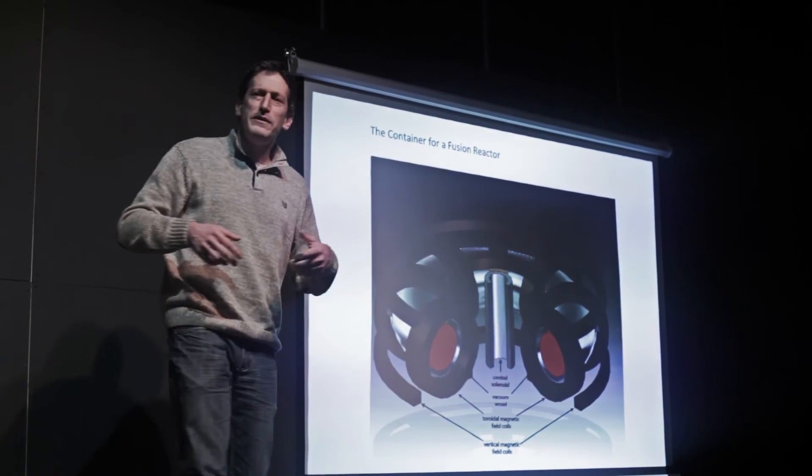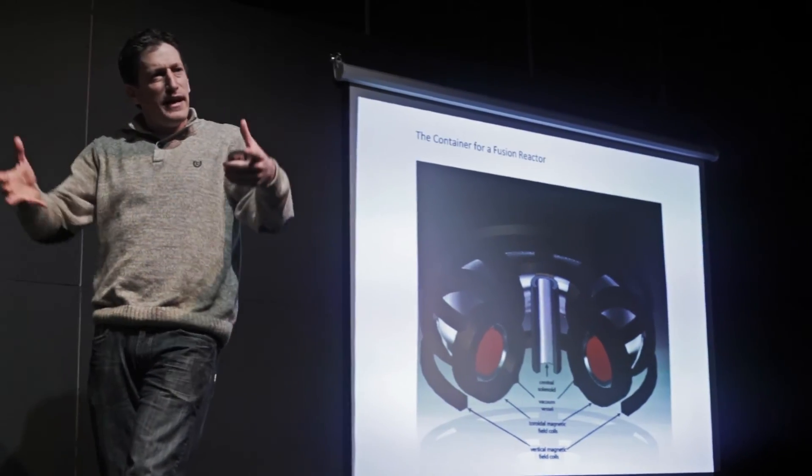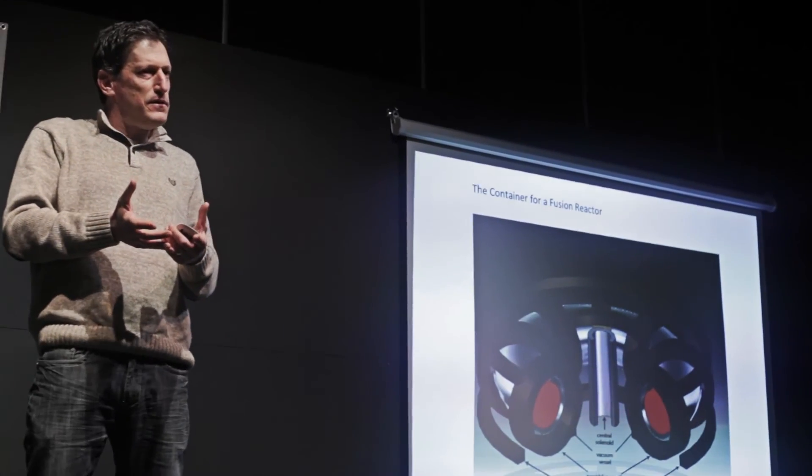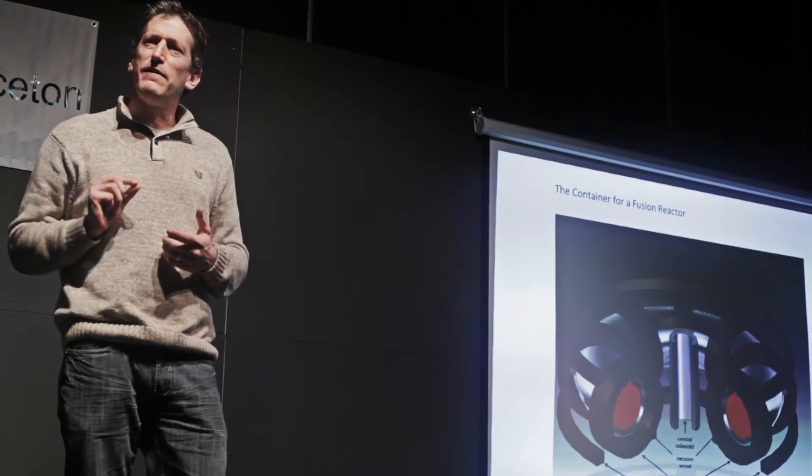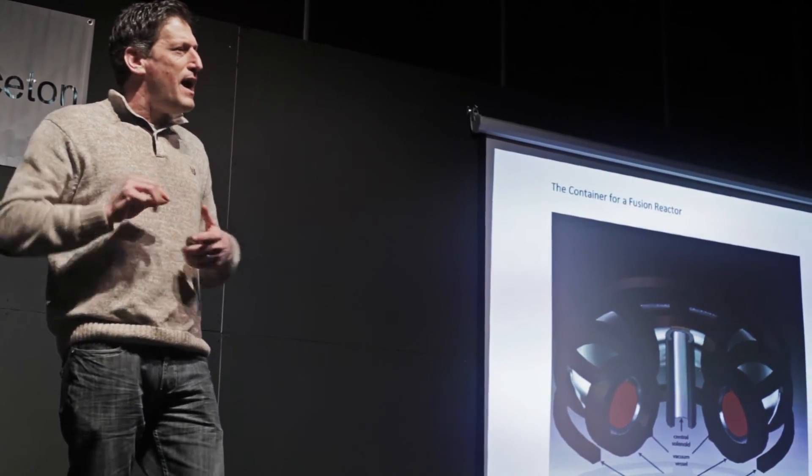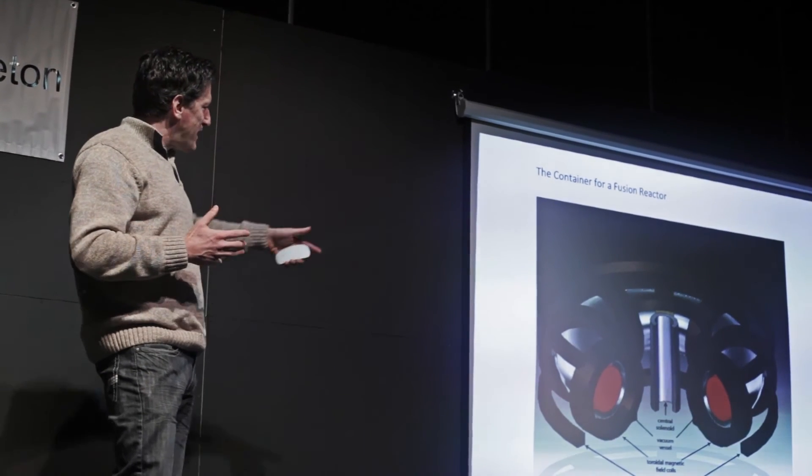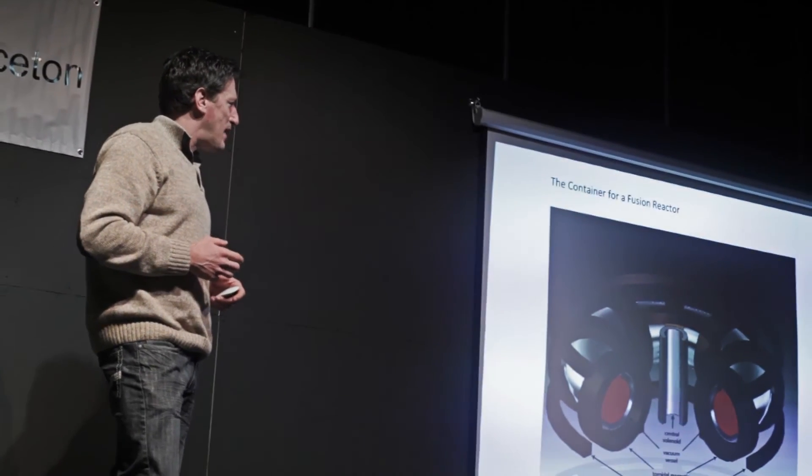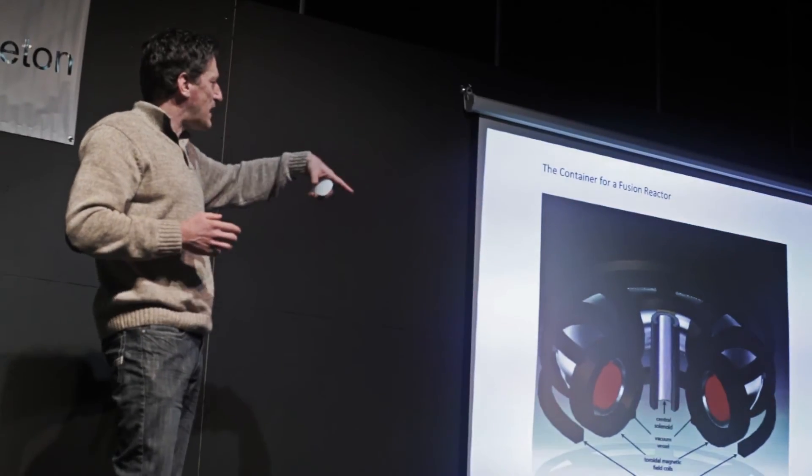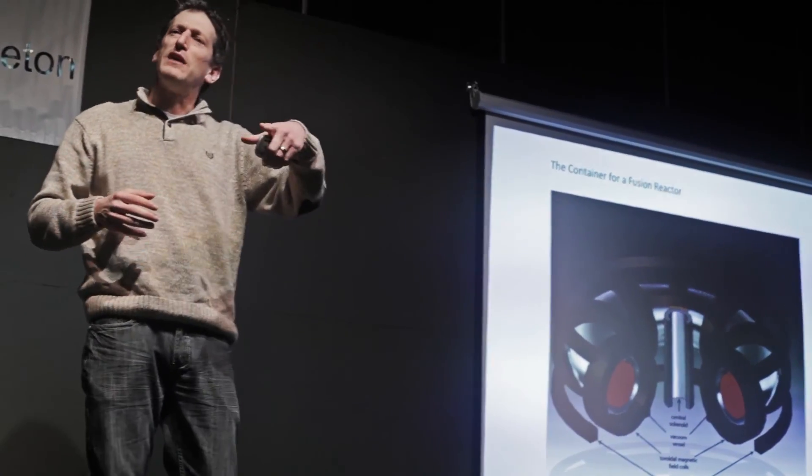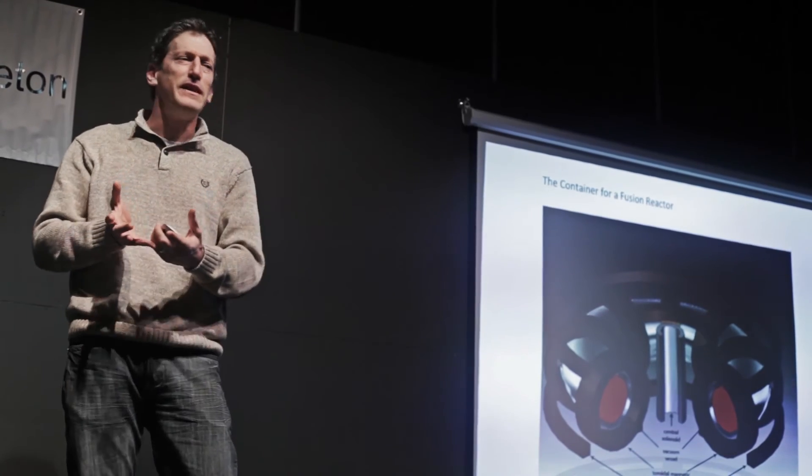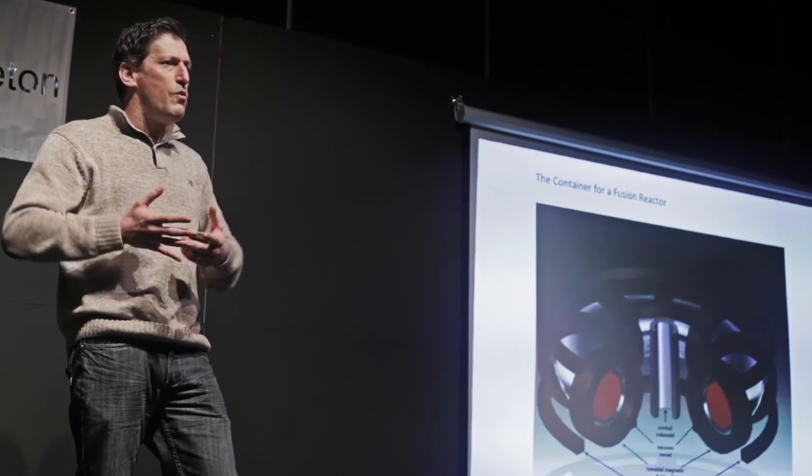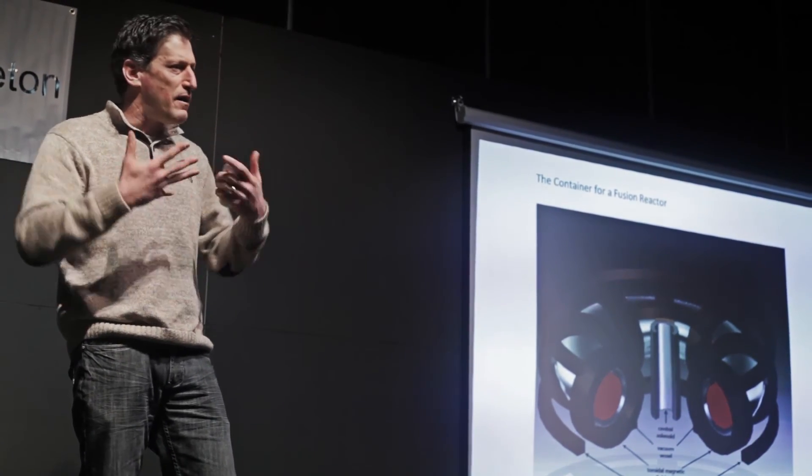And so what we do is we bend our container, our vacuum vessel, into a circle. We use what's called a vacuum pump to take the air out and put our little bit of hydrogen gas back in. And we surround it with magnets, which is what's represented in brown here. So the silver is the vacuum vessel, the red represents the plasma, and the brown are the magnets that are going to cause the plasma to go around the inside of the donut while we heat it up and get our fusion to occur.